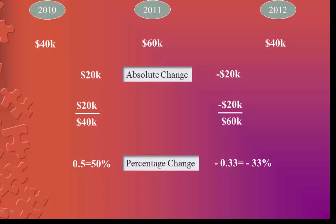It is counterintuitive that an increase of $20,000 followed by a decrease of $20,000 is reflected in a percentage change of plus 50% and negative 33%. One would expect equal absolute values. This problem and others can be avoided if we use the midpoint formula.